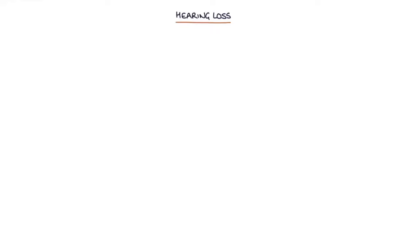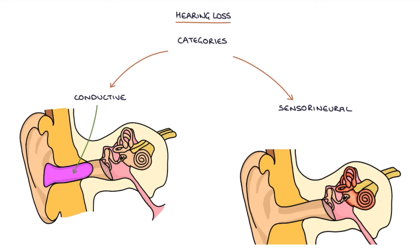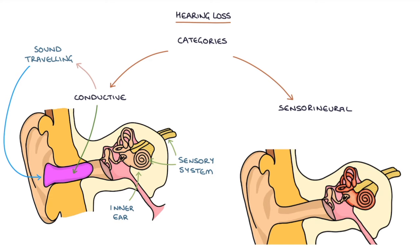There are two main categories of hearing loss: conductive hearing loss and sensorineural hearing loss. Conductive hearing loss relates to a problem with sound traveling from the environment into the inner ear. The sensory system may be working correctly, but the sound is not reaching the sensory system. An example is putting earplugs into your ear — the sound can't reach the inner ear because the earplugs are in the way.